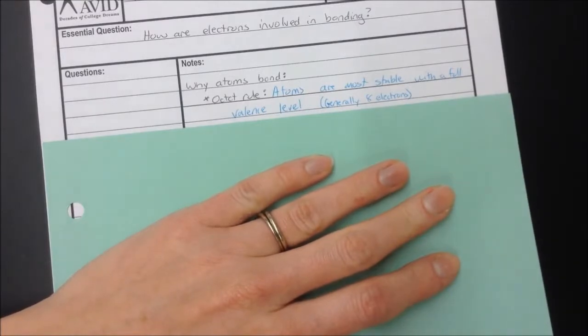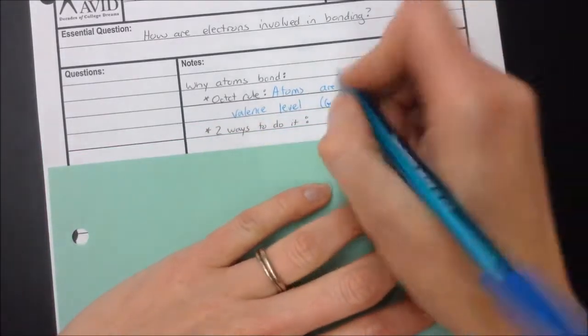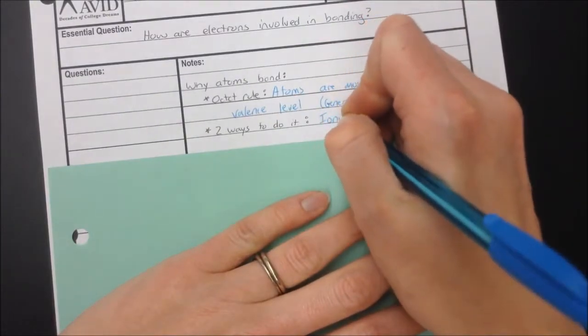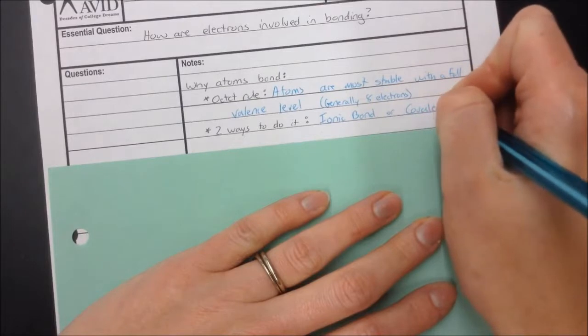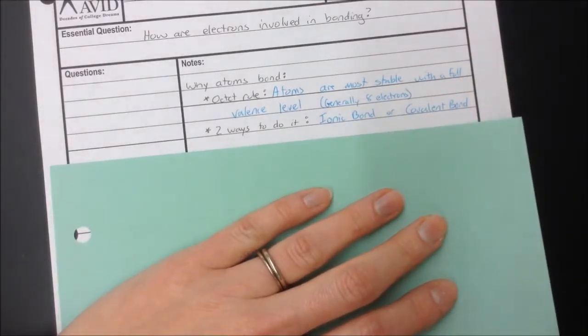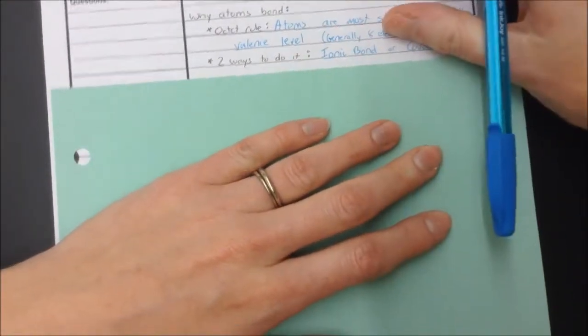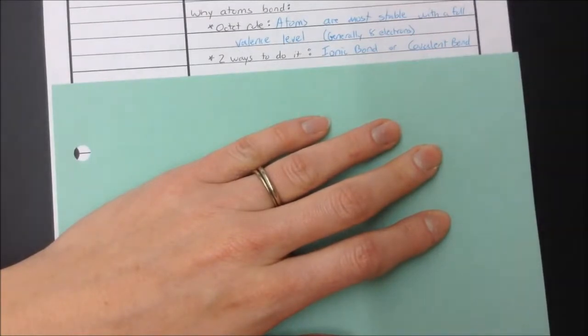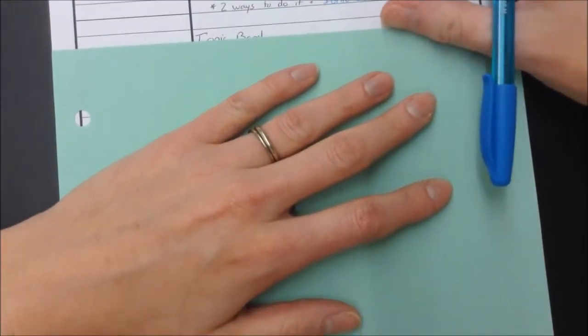In order to get those full valence shells, there's two ways that they do it. They either form an ionic bond or they form a covalent bond, and which one they form depends on how many valence electrons they have. We talked about how to identify what kind of bond forms, and now we'll understand a little bit more why metals and non-metals form an ionic bond and non-metals form covalent bonds. We're going to talk about ionic bonds first.